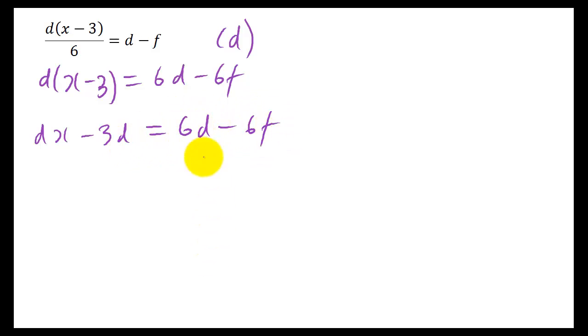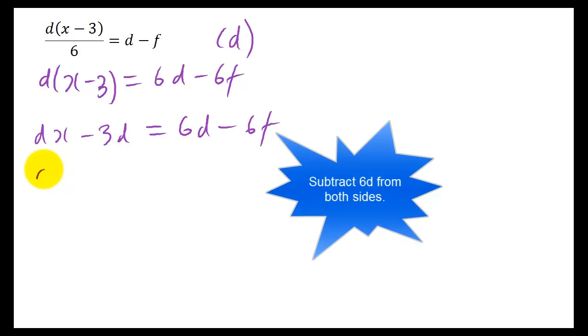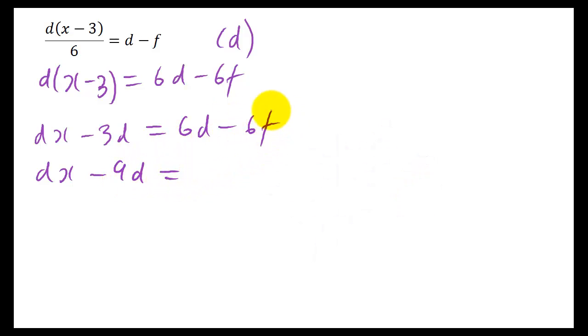Take the 6D away from this side so all the D's on the same side. So you get DX minus 9D, 3D minus 6D is minus 9D. And we're left with minus 6F. This negative doesn't disappear. A lot of people lose it when they take a term in front of a cross. Don't do that.